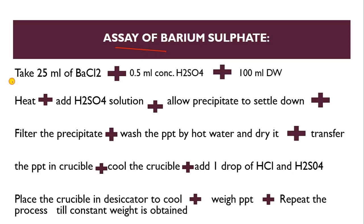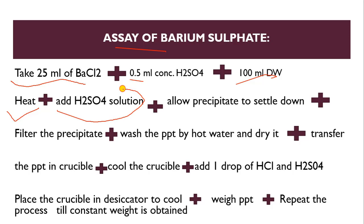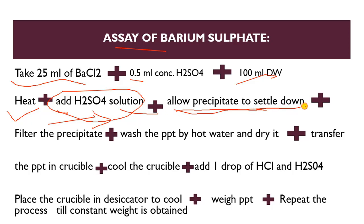For the procedure: take 25 ml of barium chloride, add 0.5 ml of concentrated H₂SO₄ and 100 ml of distilled water. Heat the solution, then add H₂SO₄ solution again to produce a precipitate. Allow the precipitate to settle down.